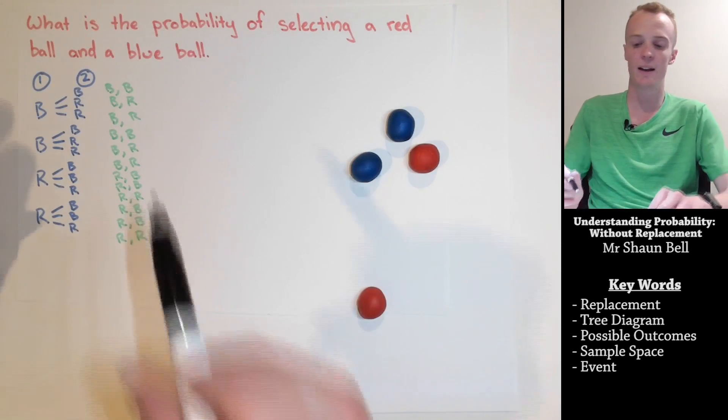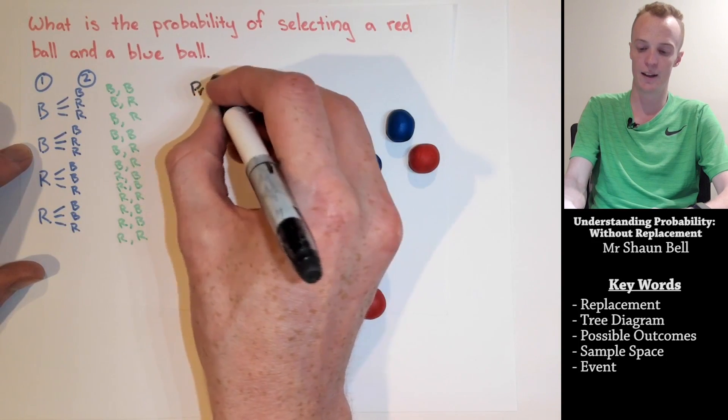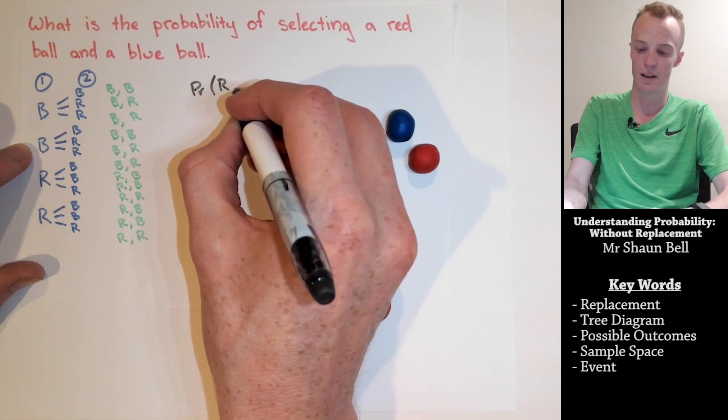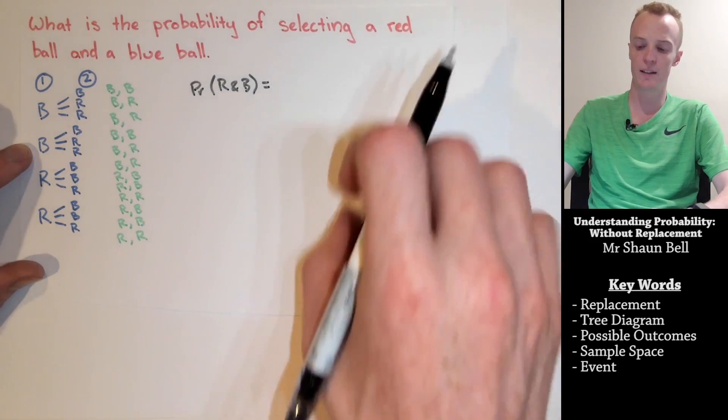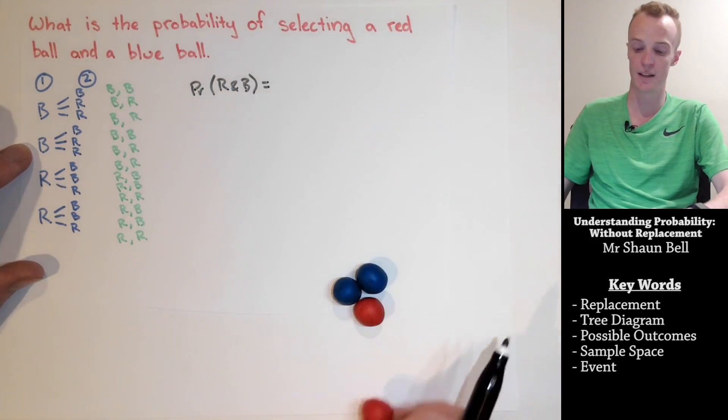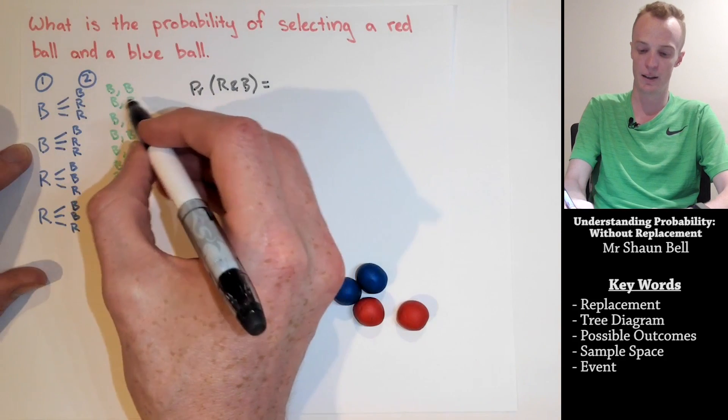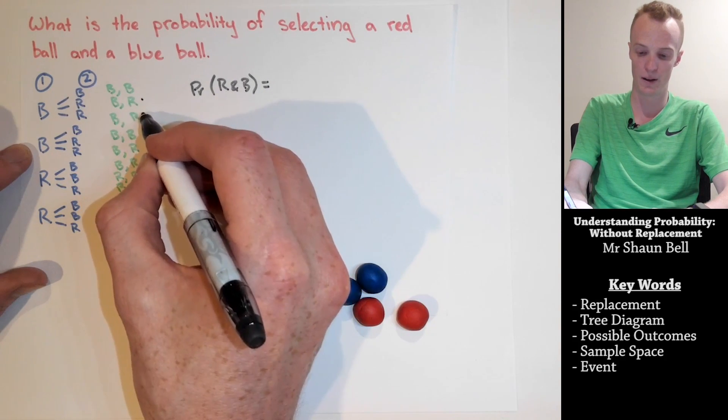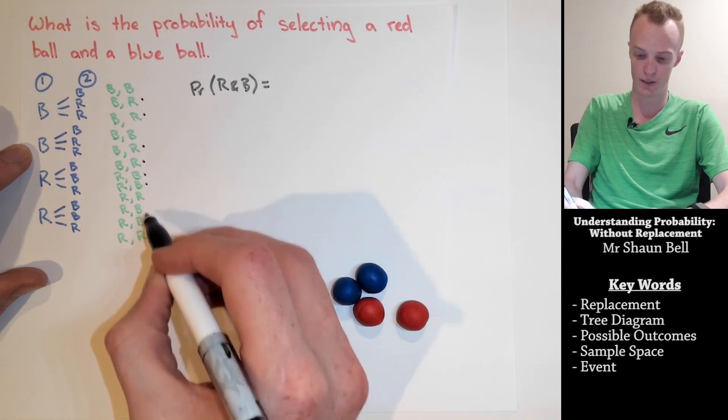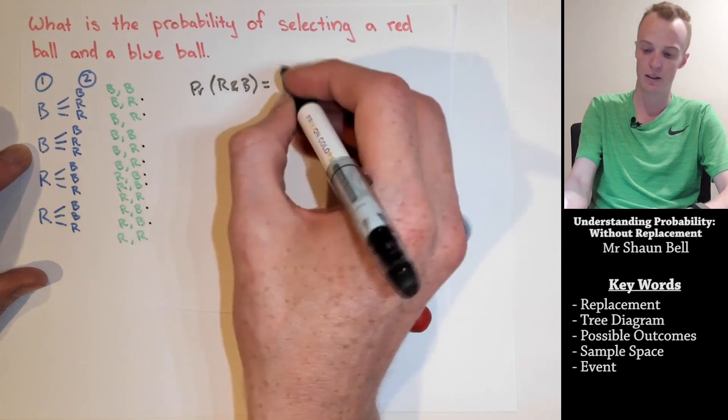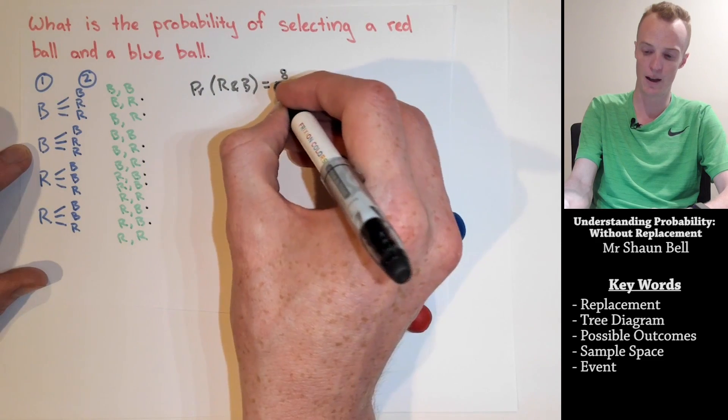From here we can now calculate the probability of selecting a red and a blue ball in any order. We first need to count the total number of successful outcomes. So let's quickly go through: there is one here, here, 3, 4, 5, 6, 7, 8, so there are 8 successful outcomes.